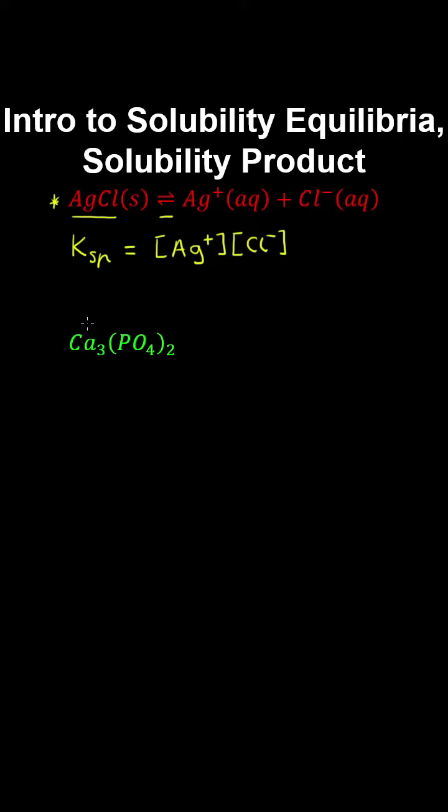For example, calcium is an alkaline earth metal which has a 2 plus charge, and therefore to balance the charges on this ionic solid, the phosphate ion must have a 3 minus charge.